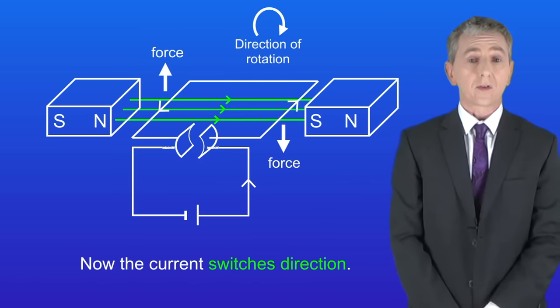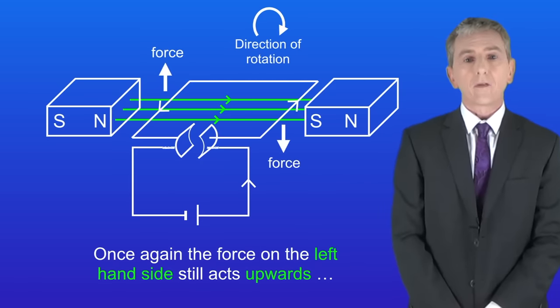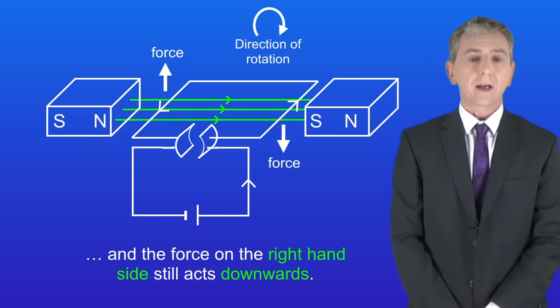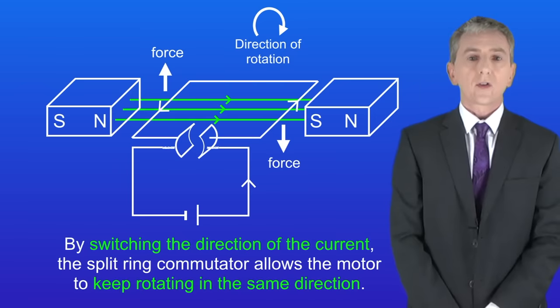Now the current switches direction. So once again the force on the left hand side still acts upwards, and the force on the right hand side still acts downwards. So as you can see by switching the direction of the current, the split ring commutator allows the motor to keep rotating in the same direction.